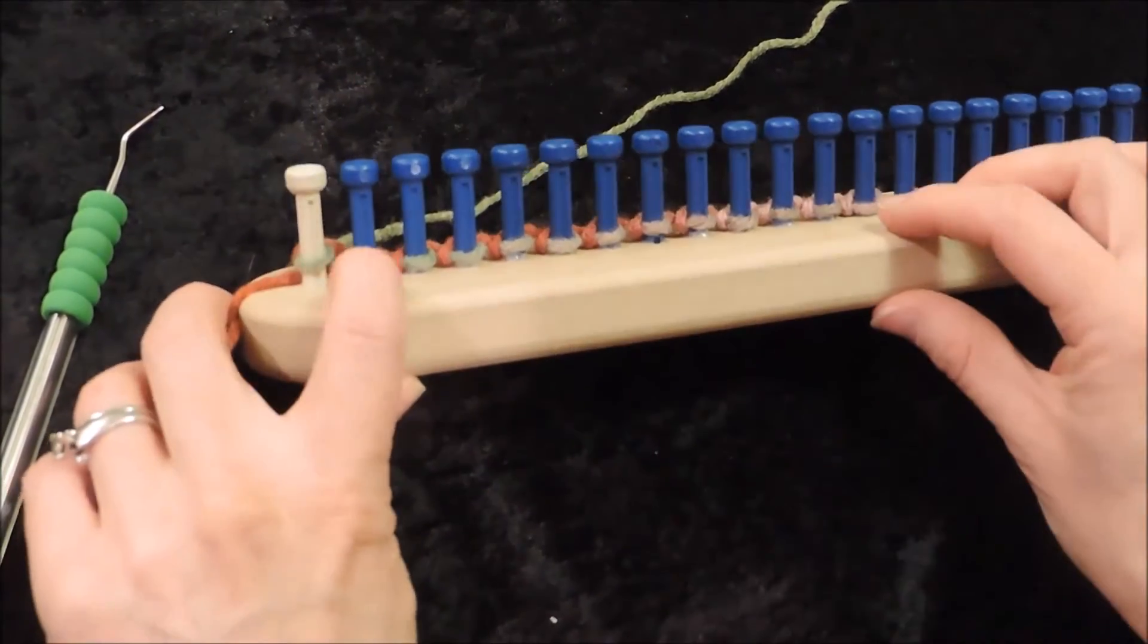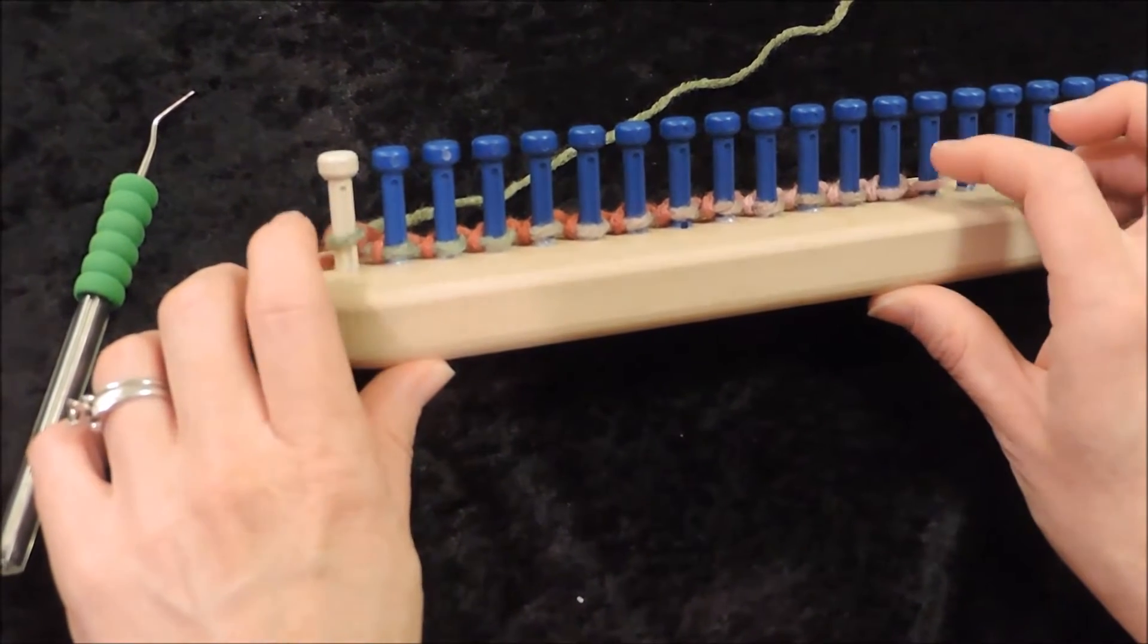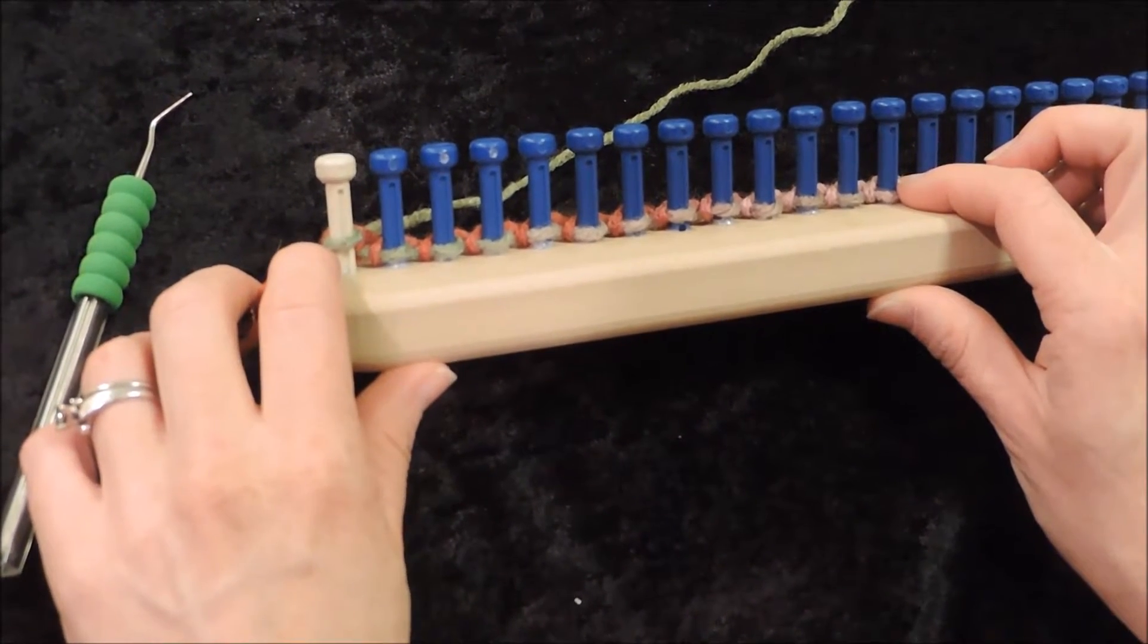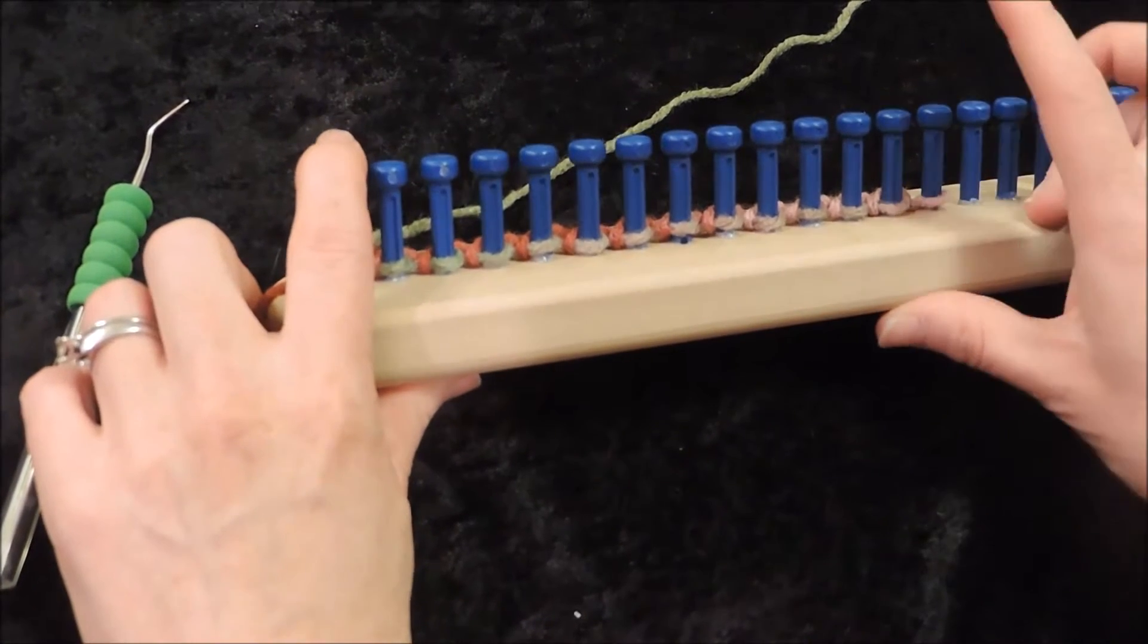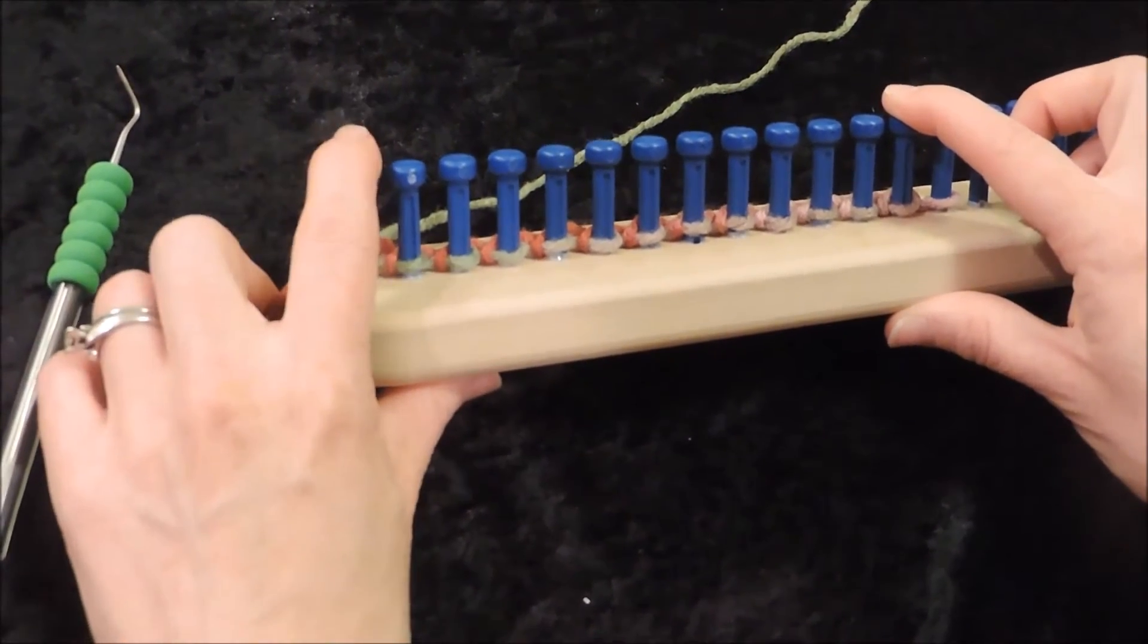If I'm working on an ear warmer and I want it to be 12 pegs wide then I need to cast on 14 pegs because we're going to be slip stitching the first peg and the last peg when we're doing our e-wrap and that's going to make those straight edges.